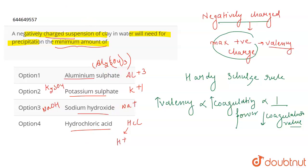The ion having the maximum valency is given in option number one, which is aluminum sulfate. As it has the maximum valency, it is going to have the maximum coagulating power and the minimum amount of it will be required. Therefore, the correct answer is option one.